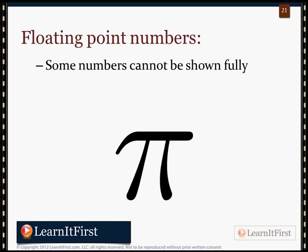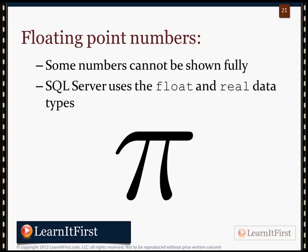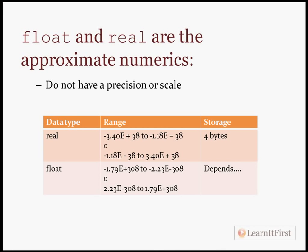Lastly, floating point numbers. You get into situations where a number can't be fully expressed — for example, pi. I think one website has calculated pi to 100 million digits and is still continuing. Pi would fall under approximate numerics. If you were to store pi in a float or real data type, what SQL Server sends back is not the actual value of pi — it's an approximation. Float and real don't have precision and scale. It's going to be pretty rare to need float and real. If you don't know what floating point is, chances are you're probably not working with it.